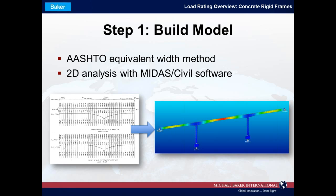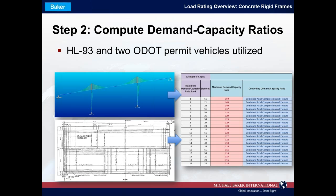We model the structure in 2D as a one-foot-width strip of the bridge and calculate distribution factors using the AASHTO equivalent width method for concrete slab bridges. The model is built using information from the original design plans and loaded with permanent loads applied to the one-foot-width strip, as well as HL-93 live load and two representative ODOT permit vehicles whose distribution factors are also calculated using the AASHTO equivalent width method.